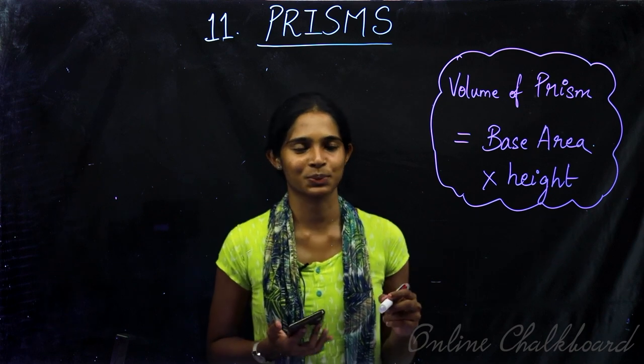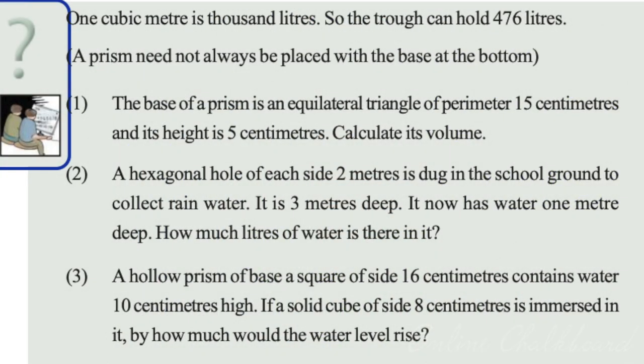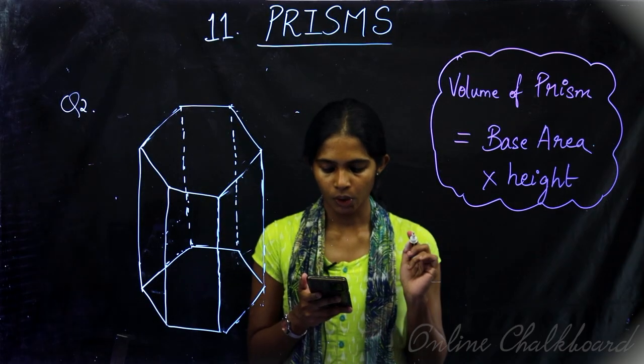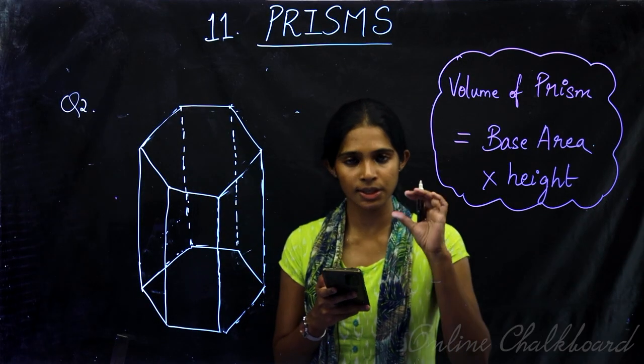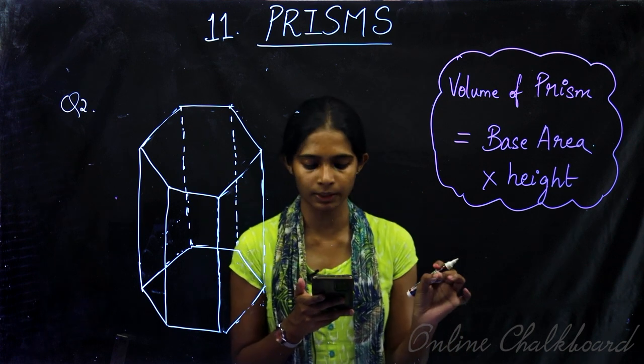Question number 2. A hexagonal hole of each side 2 meters is dug in the school ground to collect rainwater. It is 3 meters deep. It now has water 1 meter deep. How much liters of water is in it? This question is very important.